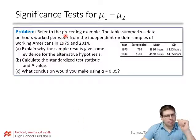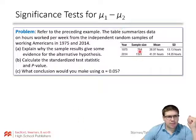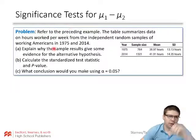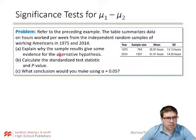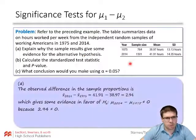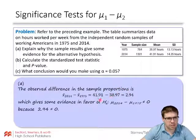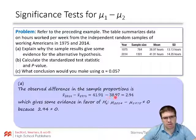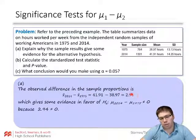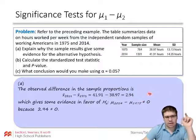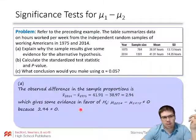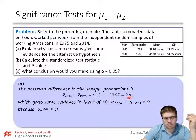Referring to the preceding example: the table summarizes hours worked per week for independent random samples of working Americans in 1975 and 2014. First, explain why the sample gives some evidence for the alternative hypothesis. The observed difference in sample means — 2014 minus 1975 — is 41.9 minus 38.9. On average, people in the sample were working 2.94 hours longer per week. So that gives some evidence in favor of the alternative, because there is a difference in our sample — but is it a significant difference? That's the next question.